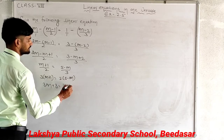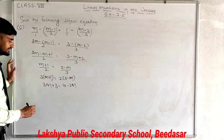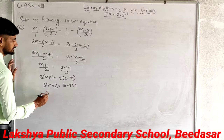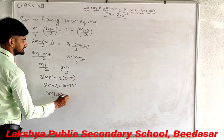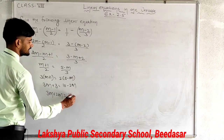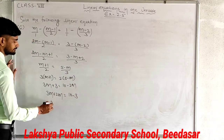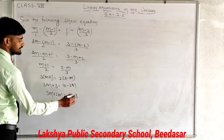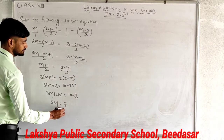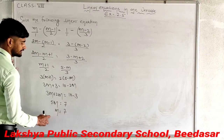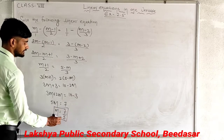Separating variables: 3m plus 2m equals 10 minus 3. So 5m equals 7, and m equals 7 divided by 5. That is your answer.